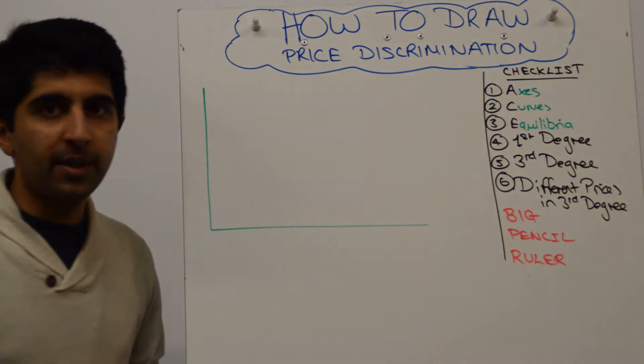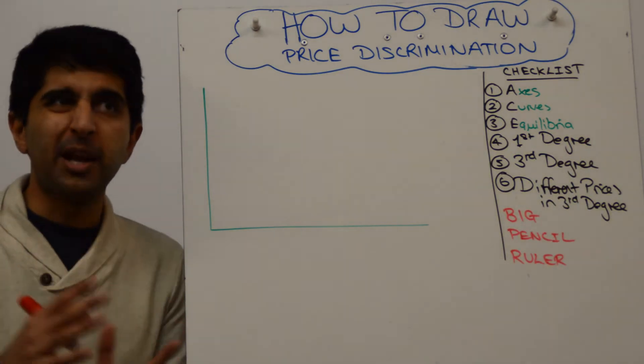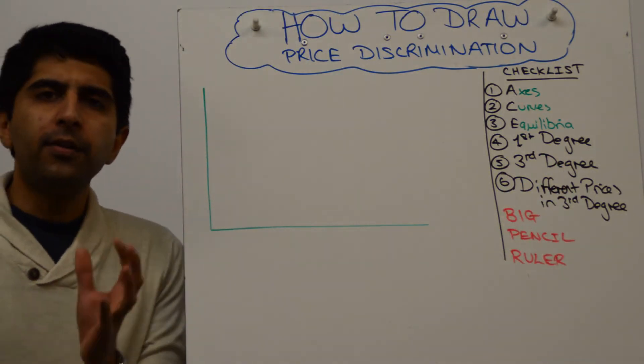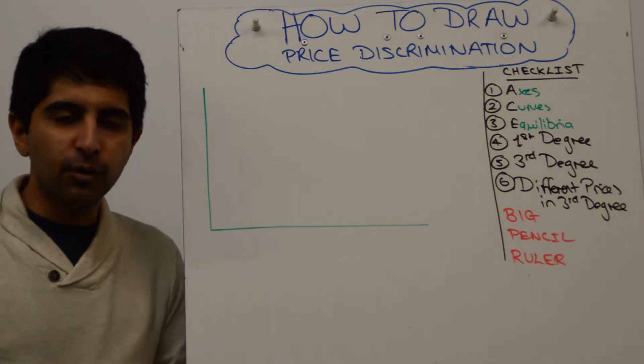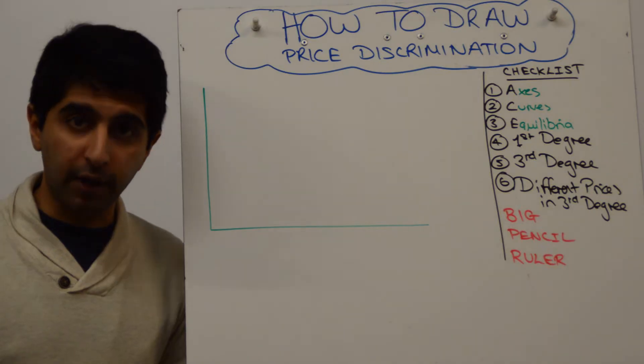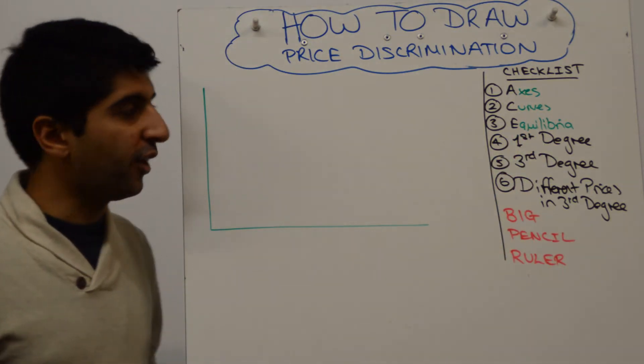One diagram to show the impact of first degree price discrimination and one other diagram, which is made up of two diagrams, to show third degree price discrimination. Now I'm not going to draw a diagram for second degree, there are lots of different ideas on second degree and I don't think you'll ever be asked to draw a diagram for second degree price discrimination. So let's just focus on first and third.